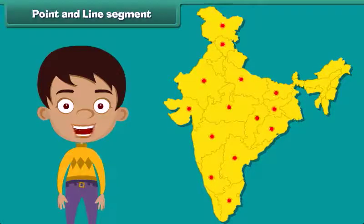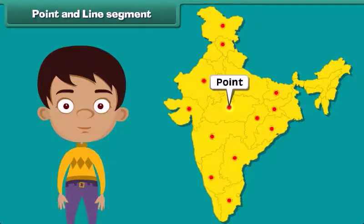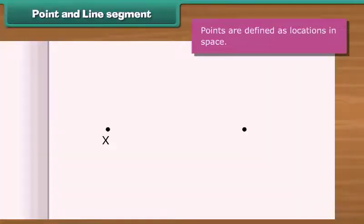Look at this Indian map. We see that the cities are represented by dots. These are called points. In geometry, points are defined as locations in space. They tell about the position of objects.